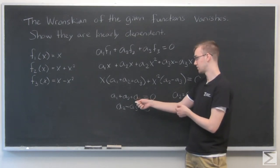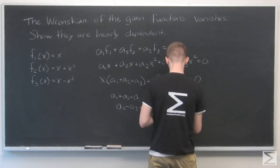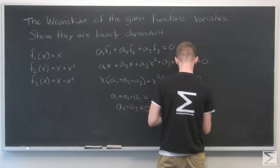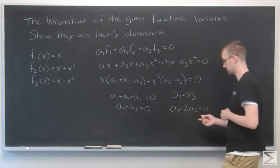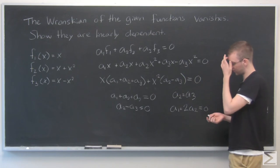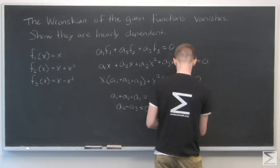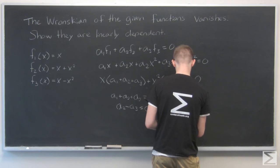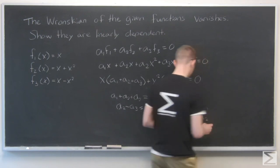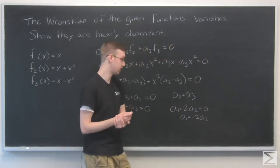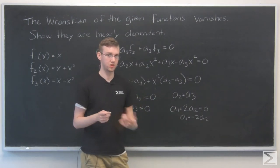Substituting a2 for a3 in the first equation, I get a1 + 2a2 = 0, so a1 = -2a2, which also equals -2a3. These are the two important relationships I've found.